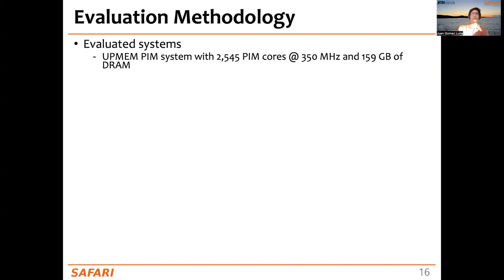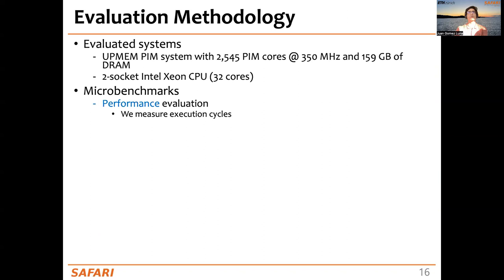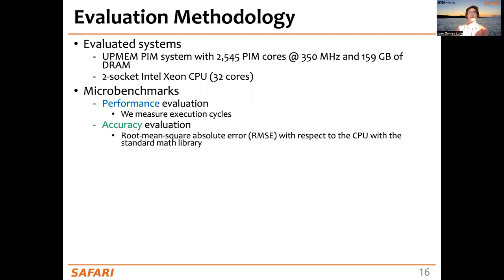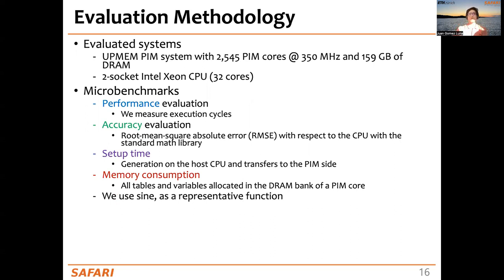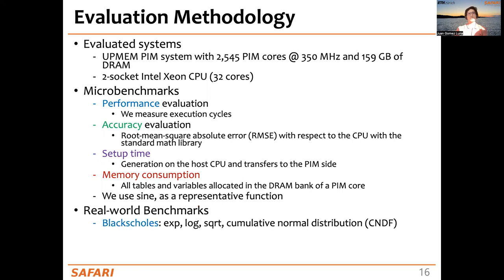For the evaluation, our evaluated systems include a UPMEM PIM system with more than 2,500 PIM cores and, as a baseline, a dual-socket Intel Xeon CPU. We create microbenchmarks for performance evaluation, measuring the execution cycles of TransPIM-Lib functions. For accuracy, we use the root mean square absolute error with respect to the CPU using the standard math library. We also measure setup time — the time needed to generate look-up tables on the host CPU and transfer them to the PIM side — and memory consumption, counting all tables and variables allocated in the DRAM bank of the PIM core. We use SINE as a representative function, and also evaluate with real-world benchmarks: Black-Scholes (which uses exponential, logarithm, square root, and cumulative normal distribution), sigmoid, and softmax.